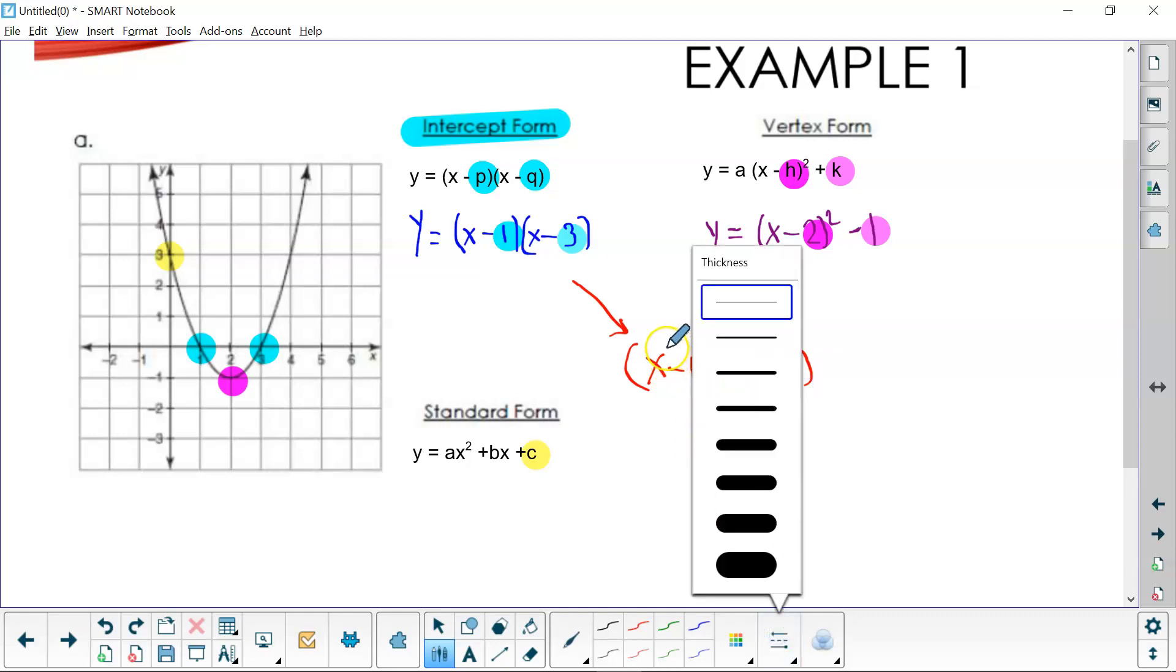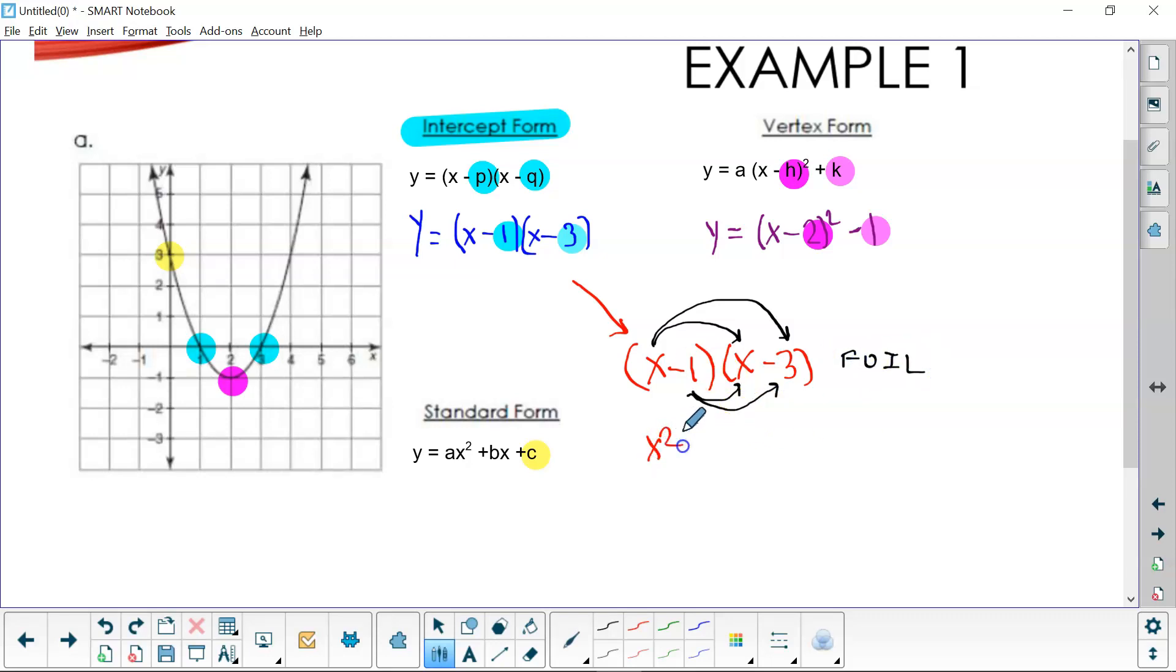First times first, we're distributing. The first term in this group times the first term in this group. The outer, the outer terms, the outside, the negative three and the x. Then the inner, and then the last. So it's first, outer, inner, last. It's going to give me x². x times x is x². Then outer, -3 times x is -3x. Then inner, -1 times x is -1x. And then last, -1 times -3 is +3.